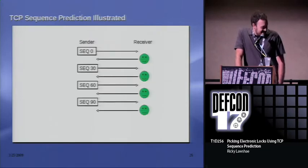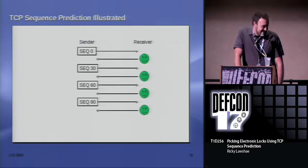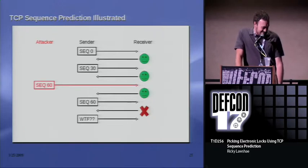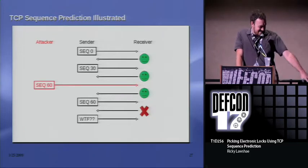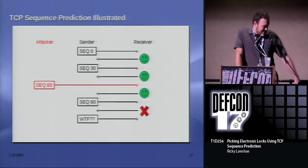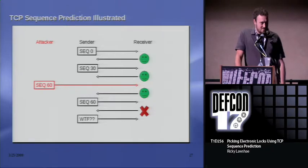Here's an example conversation between a sender and a receiver with sequence numbering. Can anybody see a pattern in the sequence numbering? I'd like to say this is a really simple example, but it's not. So the attacker guesses the next sequence number in order and sends a packet. The receiver says 'yeah, that's the next one.' The sender then tries to send its packet with that sequence number, and the receiver says 'I already got that packet — send the next one.'